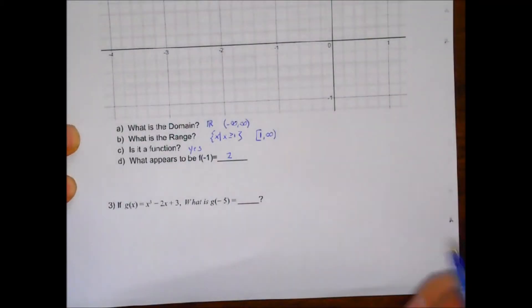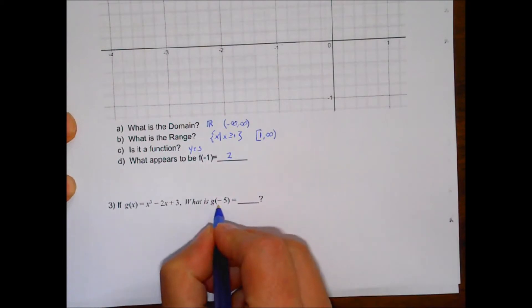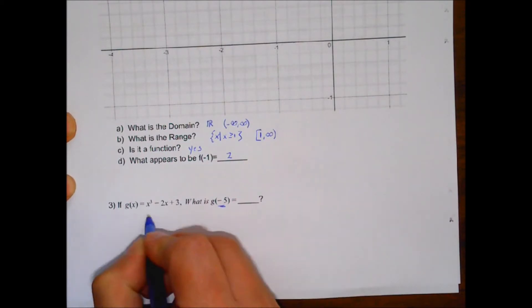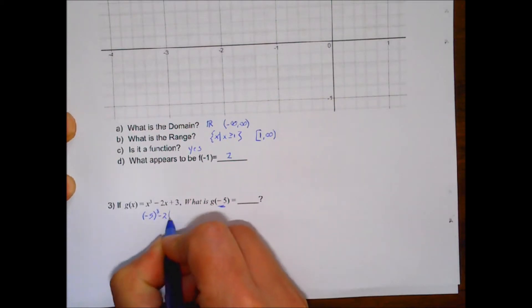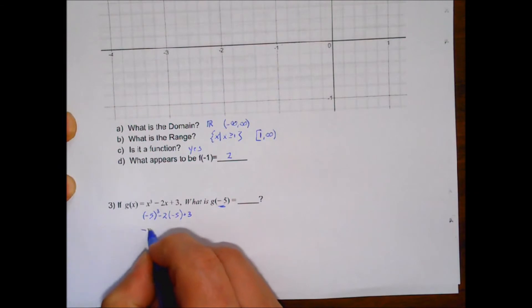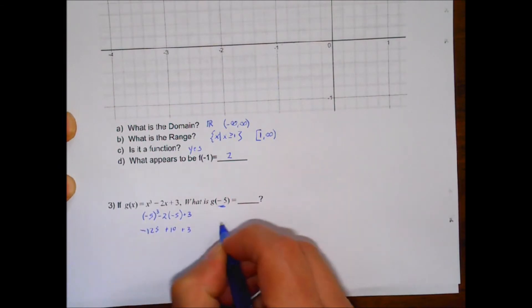Number 3. g of negative 5. That means you take that negative 5 and plug it in. So you have negative 5 to the 3rd minus 2 times negative 5 plus 3. Which comes out to be negative 125 plus 10 plus 3. Which is negative 112.